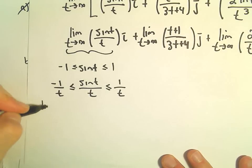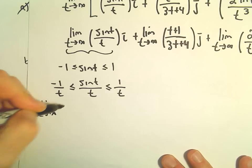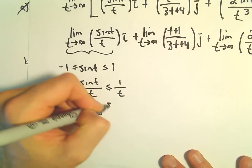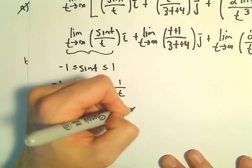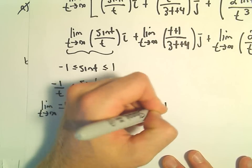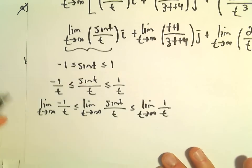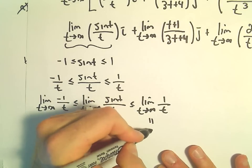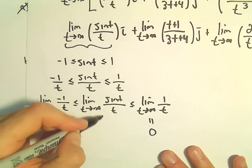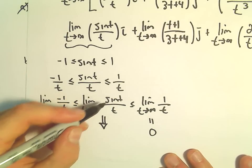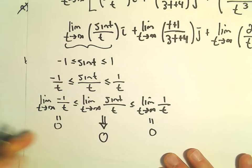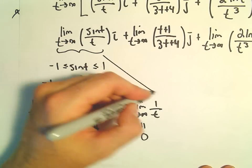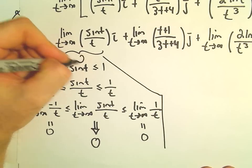If we take the limit as t goes to infinity of each of the bounding pieces: the limit as t goes to infinity of negative 1 over t is 0, and the same with positive 1 over t. So by the squeeze theorem, that implies the limit as t goes to infinity of sine t over t is also 0.